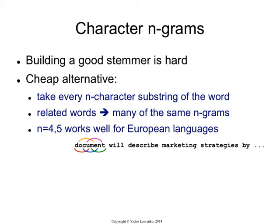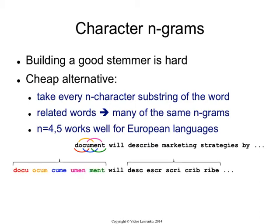Take the word 'document' and let's say we work with 4-grams. I take the first four letters — d, o, c, u — and that becomes a token. Then I take the next four letters — o, c, u, m — and that becomes the second token. So I take a word and basically slice it up into a bunch of overlapping substrings of the same length.